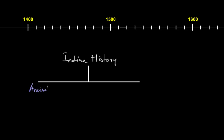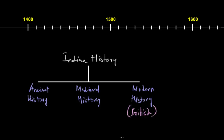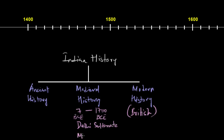Indian history has been divided into three parts: ancient history, medieval history, and modern history. Modern history is the part where we typically talk about the time when India was under the rule of the British Empire. Medieval history covers the 8th to 18th century, and in the later part of this period — from the 13th to 18th century — India was under Islamic rule, with the famous Delhi Sultanate and the Mughal Empire ruling major portions of the Indian subcontinent.